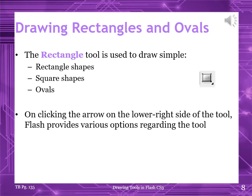Open page number 135. Drawing rectangle and ovals. The rectangle tool menu can be used to draw simple rectangles and ovals. Highlight this line. The rectangle tool is used. On clicking the arrow at the lower right corner of the tool, Flash provides you with various options regarding the tool, as shown in the figure — you can see this on your book as well as on the next slide.